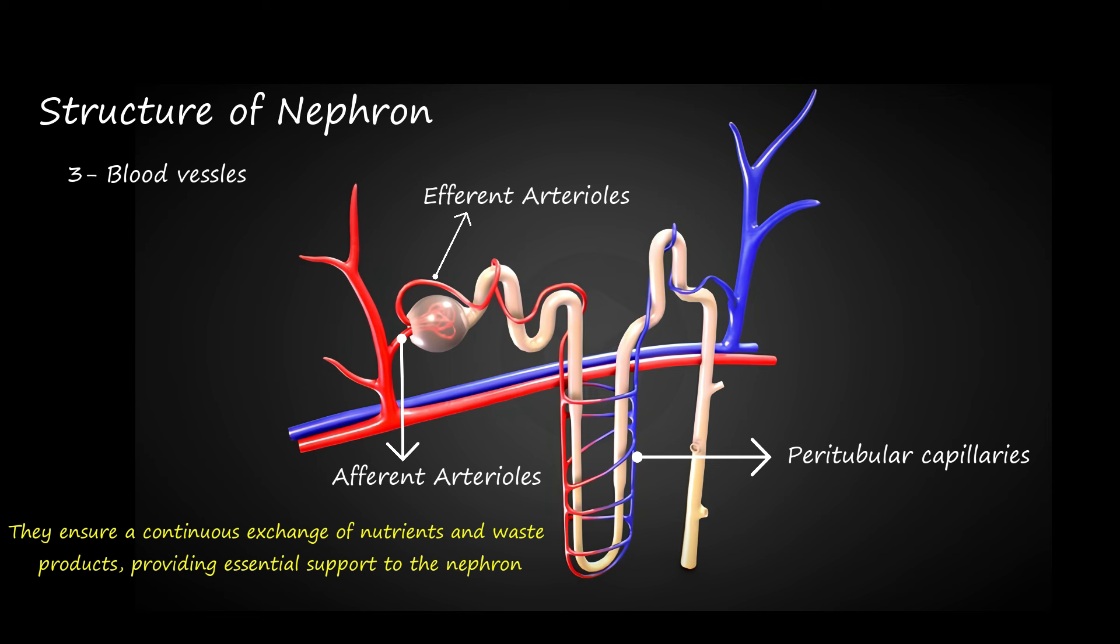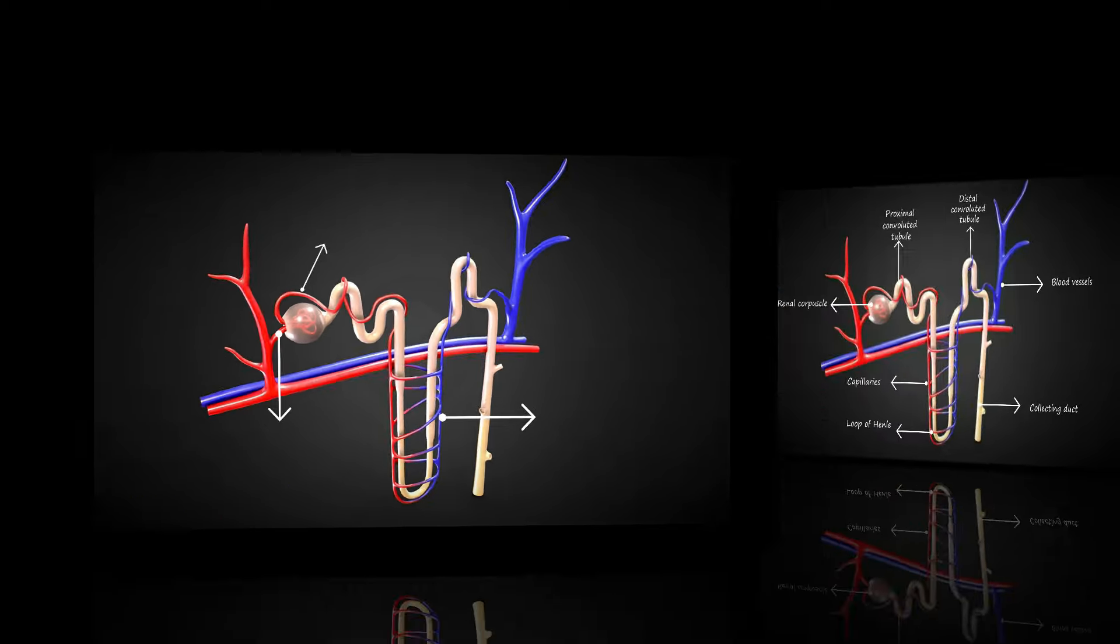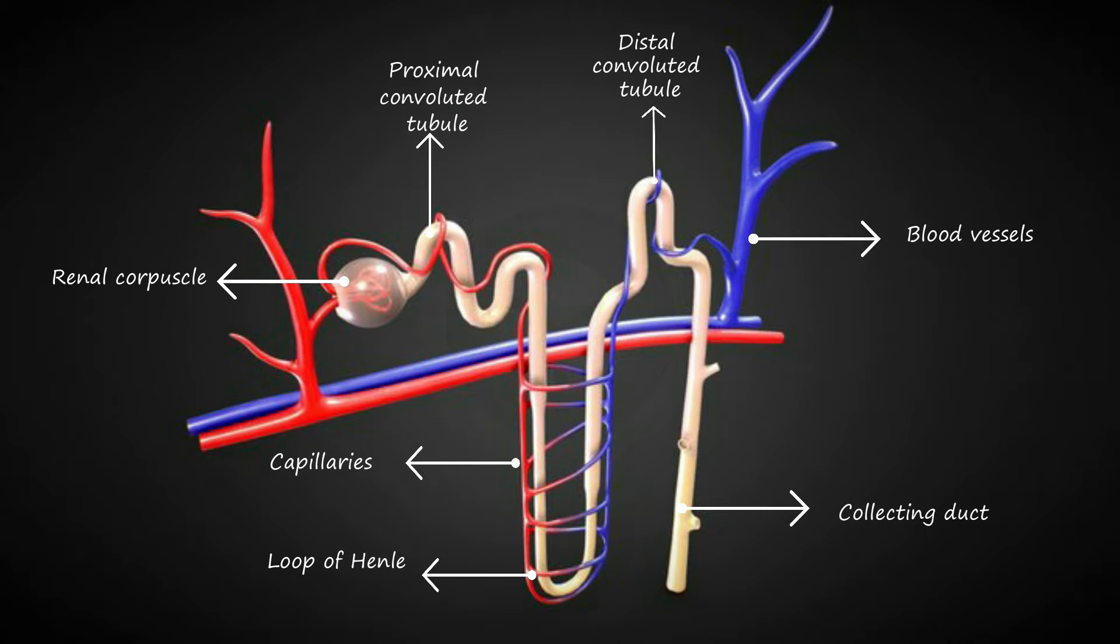Through the collaboration of renal corpuscle, renal tubules, and blood vessels, the nephron maintains bodily homeostasis, ensuring optimal functioning. Now let's discuss its function in detail.